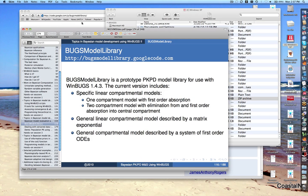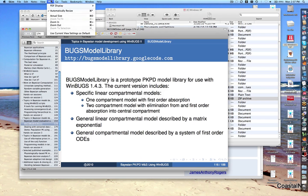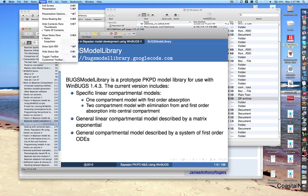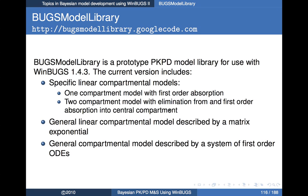So let's get into the slides. First of all, what is Bugs Model Library? It's a PKPD model library — essentially an attempt at having a PREDPP equivalent for WinBugs. PREDPP being the PK model library that comes with NONMEM. It contains a few different elements: there's a small number of linear compartmental models built in, in particular a one-compartment model and a two-compartment model with first-order absorption.